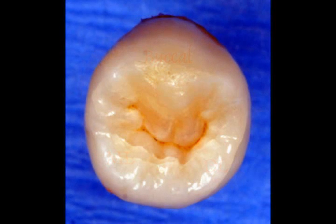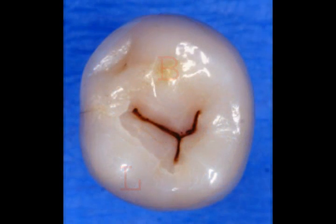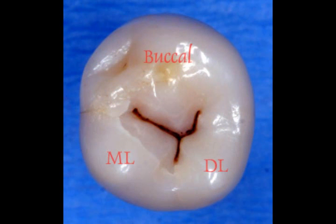To identify the mesial on this tooth, the mesial marginal ridge is taller. On a two-cusp variation, you will also notice that the lingual cusp is leaning or closer to the mesial. On a three-cusp variation, the mesial lingual cusp is larger than the distal lingual cusp.